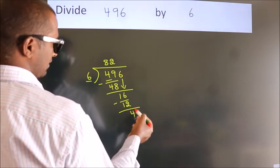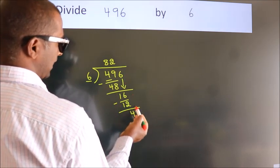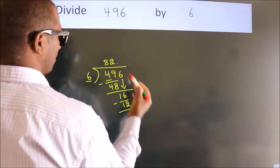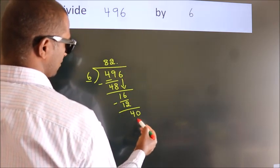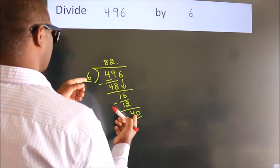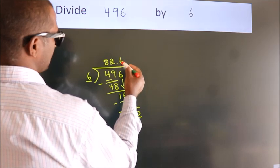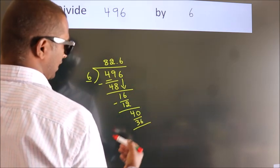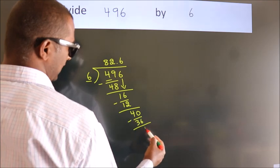After this, no more numbers to bring down, so what we do is we put a dot and take zero, so 40. A number close to 40 in the sixth table is 6 sixes, 36. Now we subtract, we get 4.